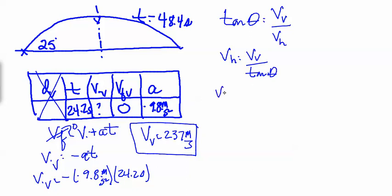Horizontal velocity is 237 meters per second divided by the tangent of 25 degrees. The horizontal velocity is equal to a whopping 508 meters per second.